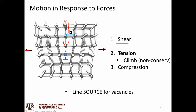But this is non-conservative motion. In order for this edge dislocation to move downward, we had to add a whole column of atoms here. Some atom from elsewhere in the lattice had to diffuse over and add itself to this column, leaving behind a vacancy.